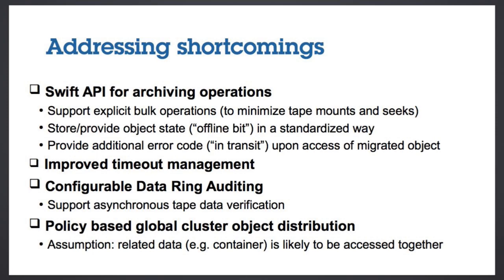With this API, we intend to provide bulk operations — for example, to move an entire container in a single operation to tape — which is much more efficient, because tape, at the moment when the cartridge is mounted, is quite fast. You can get data throughputs of 100 to 300 megabytes per second with a single tape drive. So if you put down a lot of objects in a single run, you would have the efficiency of tape.